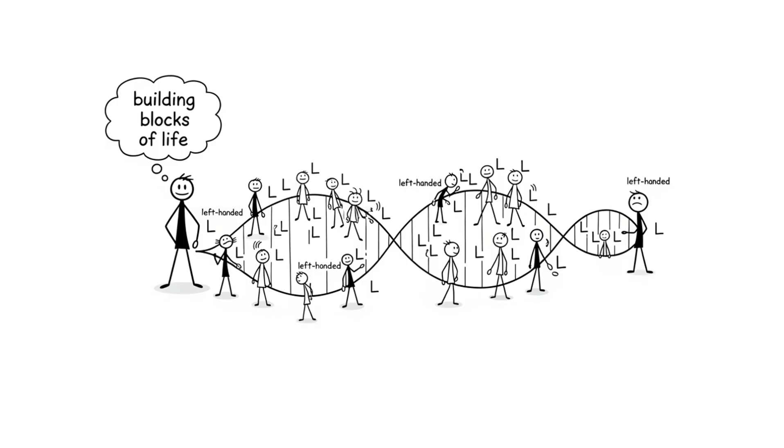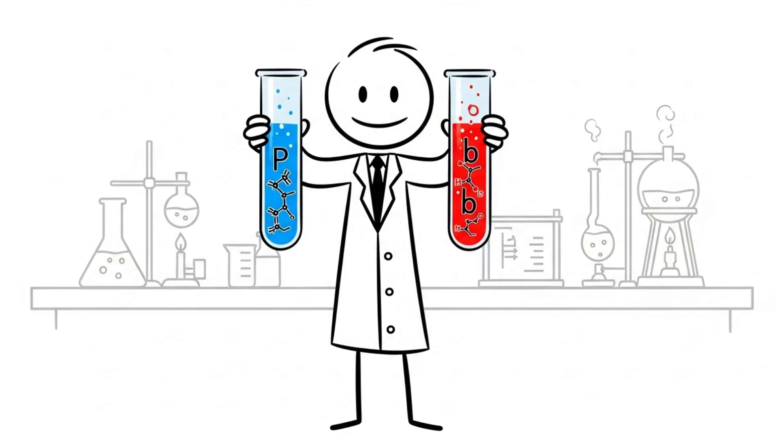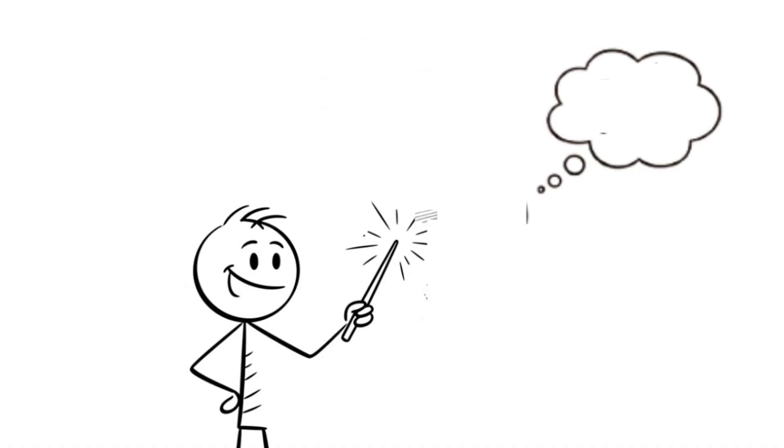Life only uses one type. For example, amino acids, the building blocks of life, are all left-handed. If you make them in a lab, they come out 50-50, half left-handed, half right-handed. But in living organisms, it's always one-handed. Why?